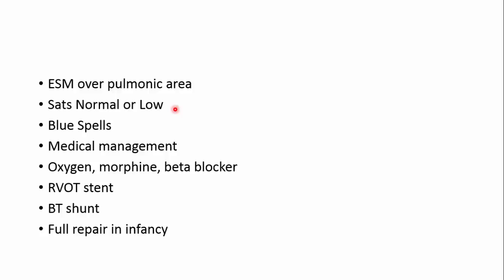On the other hand, at the worst end of the spectrum, if you have severe pulmonic stenosis, they would be quite blue. We all know about the blue spells or TET spells in which the children go blue all of a sudden. This can usually be treated with oxygen and morphine, and the long-term treatment is giving beta blockers pending surgery.